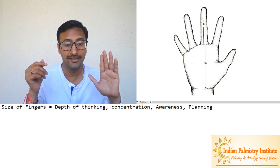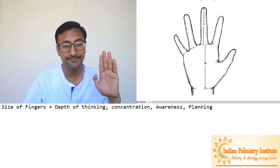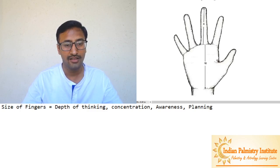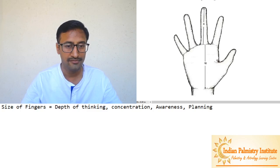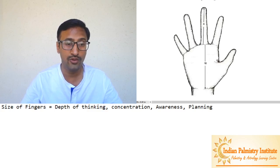What does the size of fingers tell? It tells about depth of thinking - how deeply you can think about one subject. It tells about your concentration span - how long you can put your mind on one thing. It tells about planning - how well you plan about something. How much awareness you have about the things, about the job you are doing.